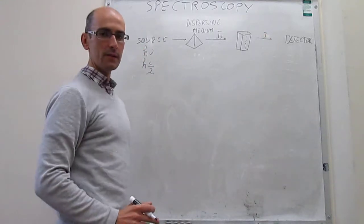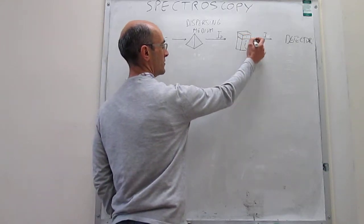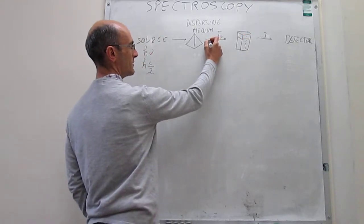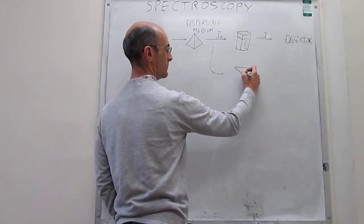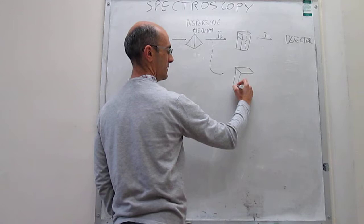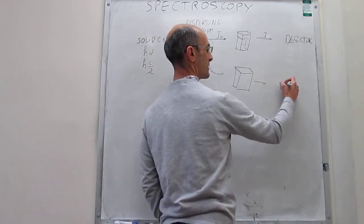In most common spectrometers, you actually have not only a sample holder, you also have a blank. So you can split this beam and pass it through a reference, which will be your blank cuvette. Usually it has the solvent.